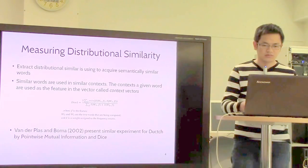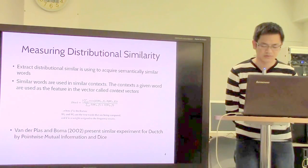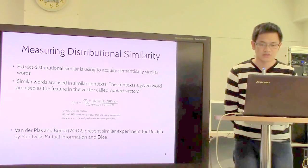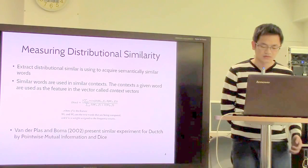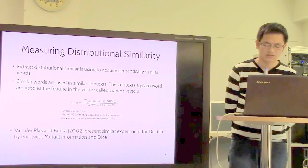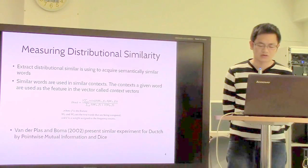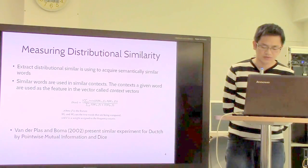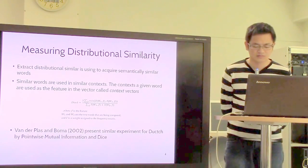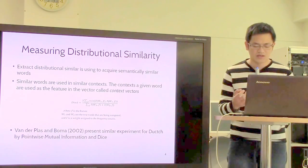Now for the method. First, measuring distributional similarity. A popular method to extract semantically similar words is to extract the distributional similarity of words from a large corpus. They use features of a given word—the contexts of the given word found in syntactic context.